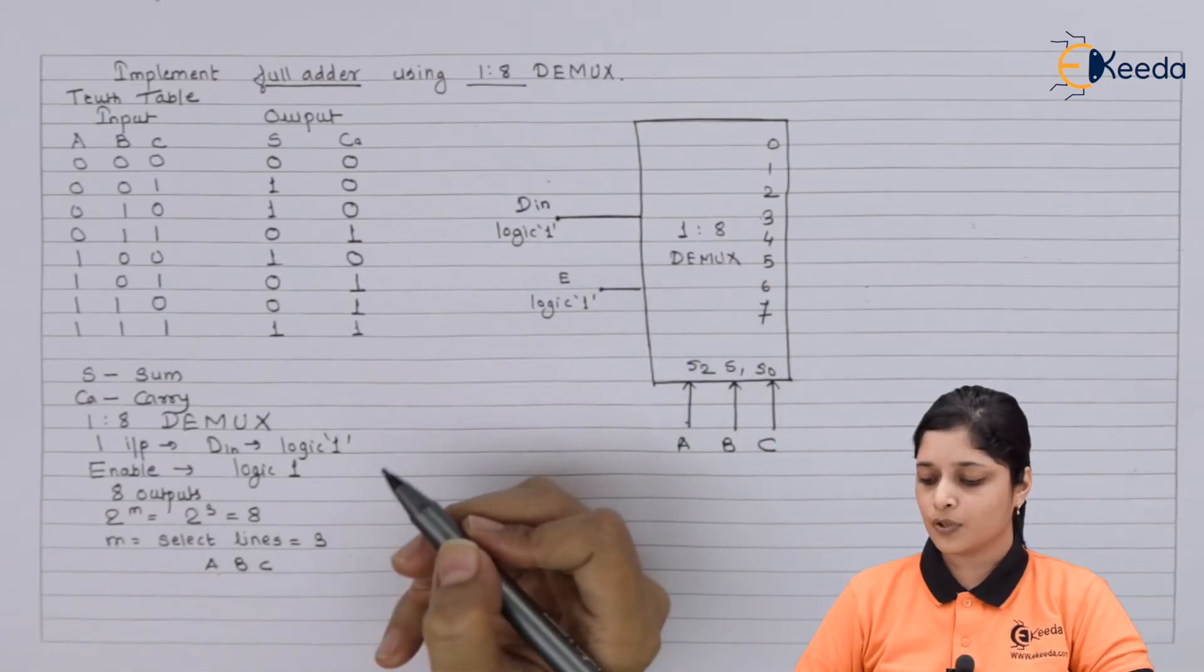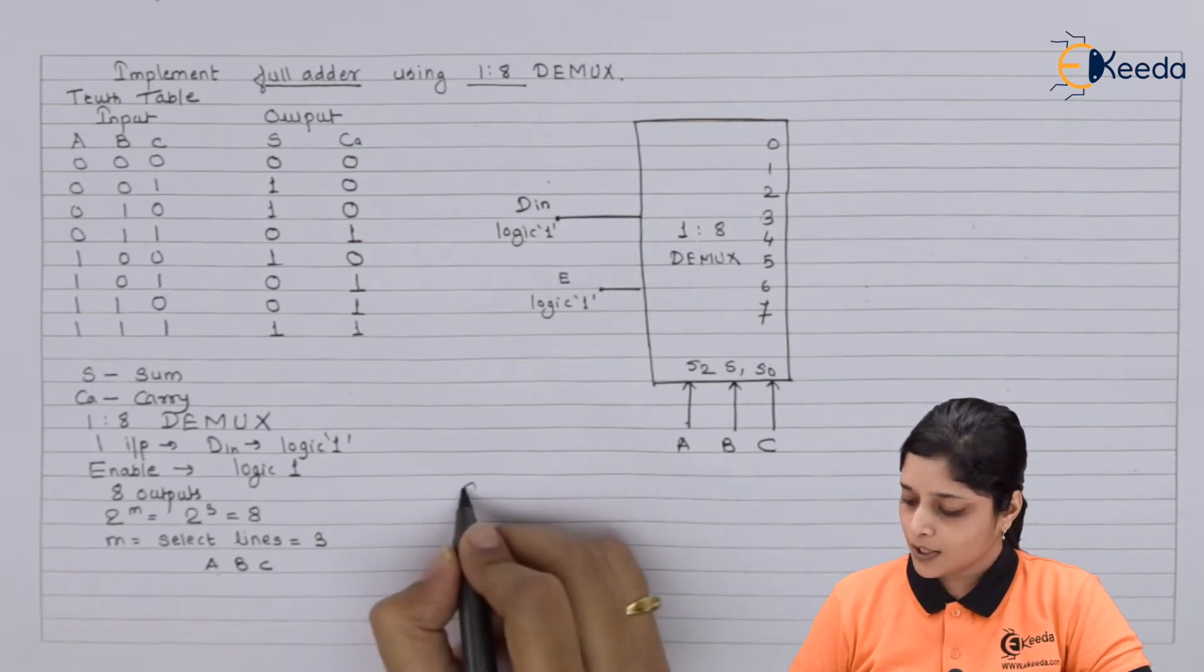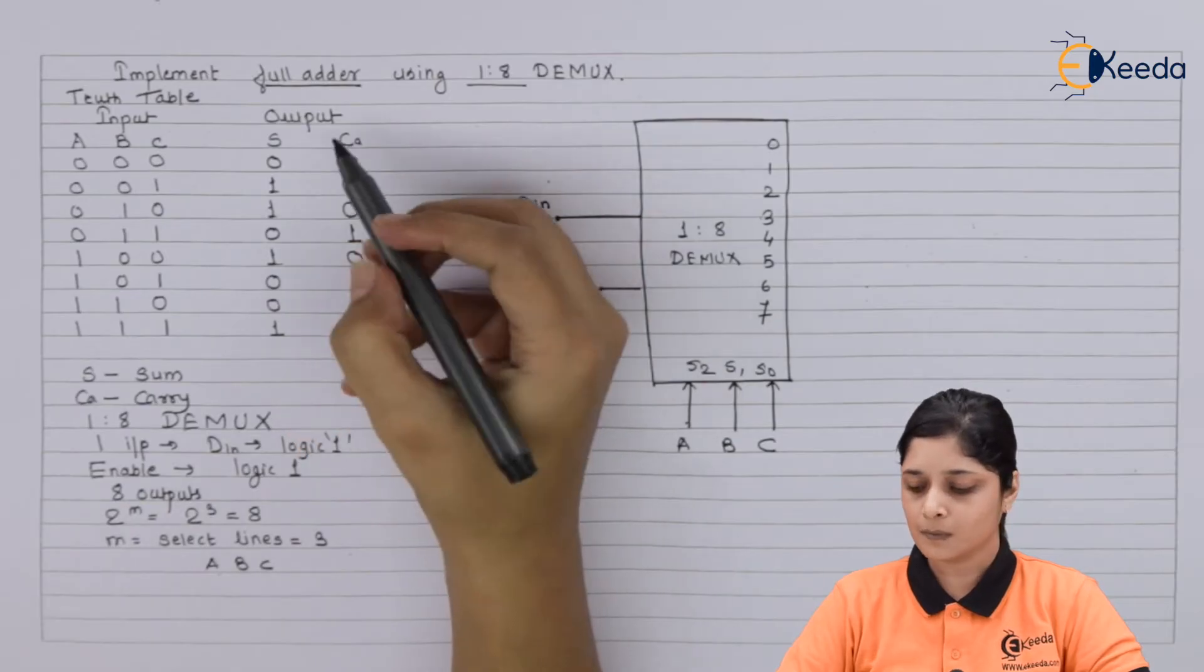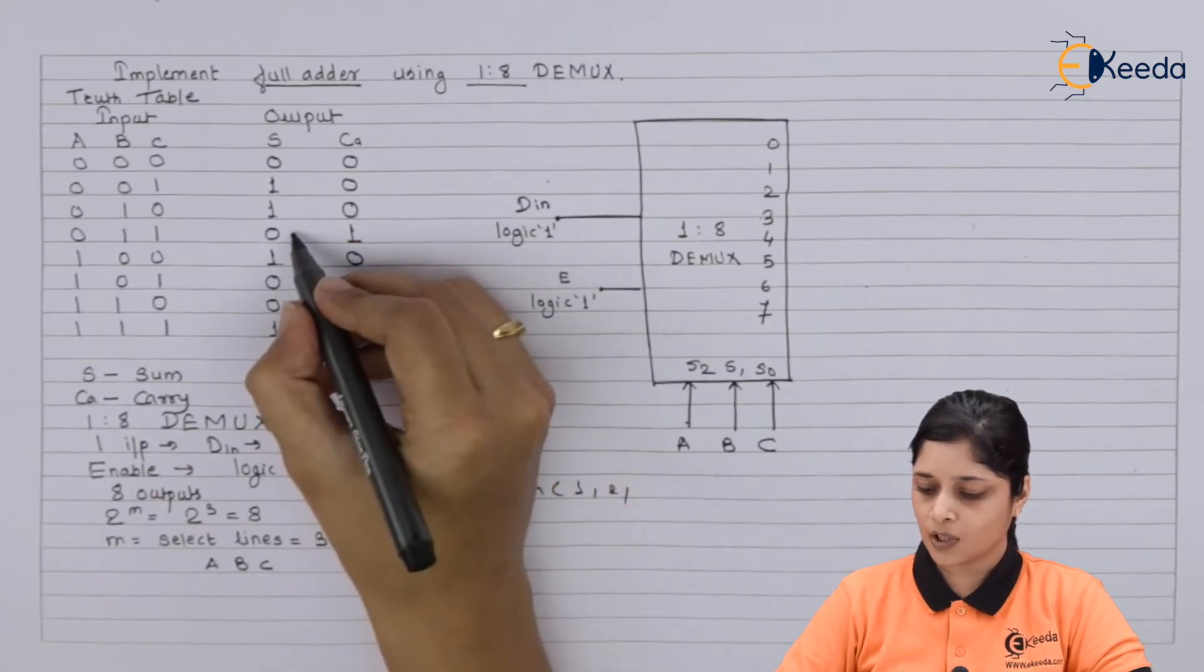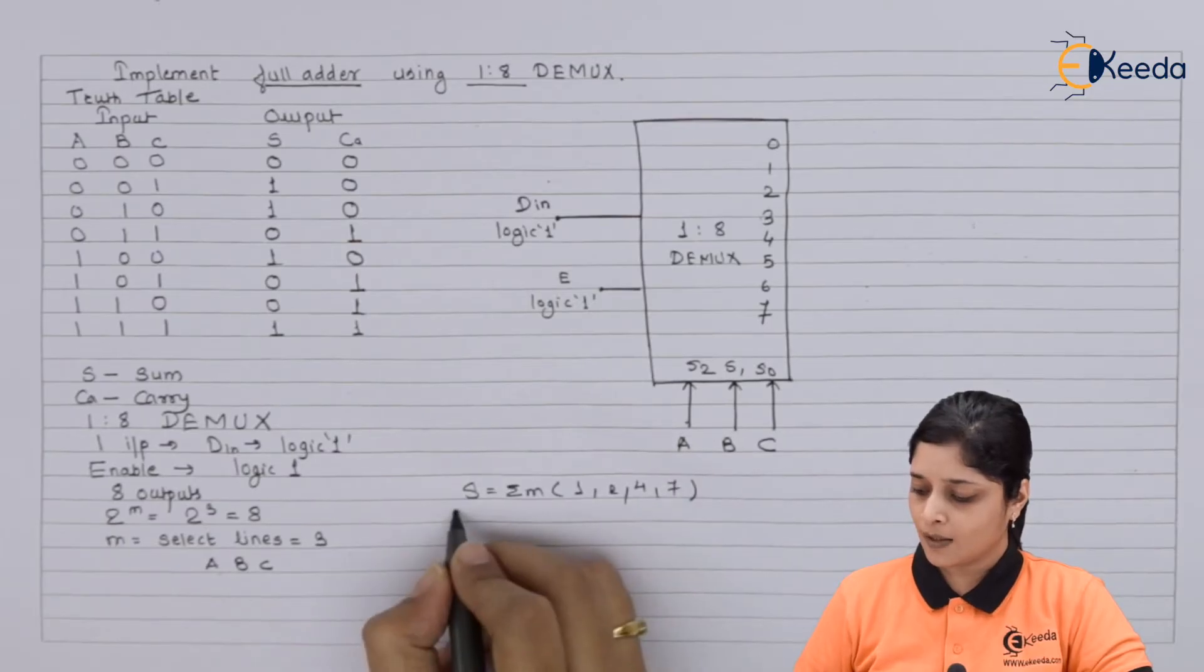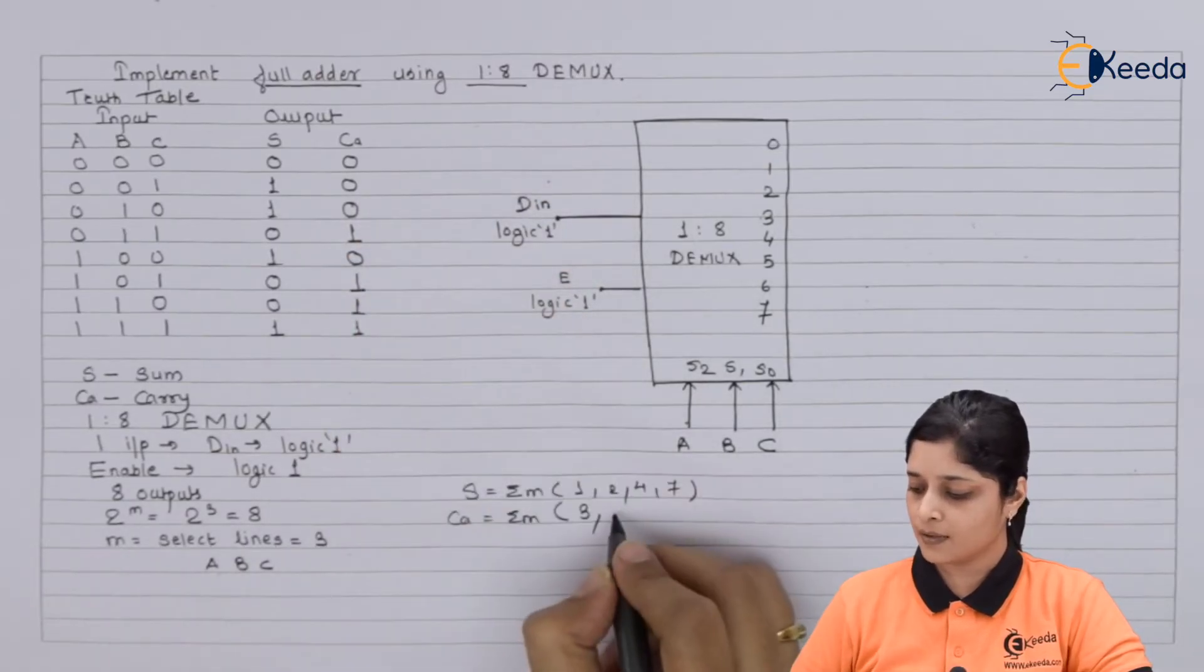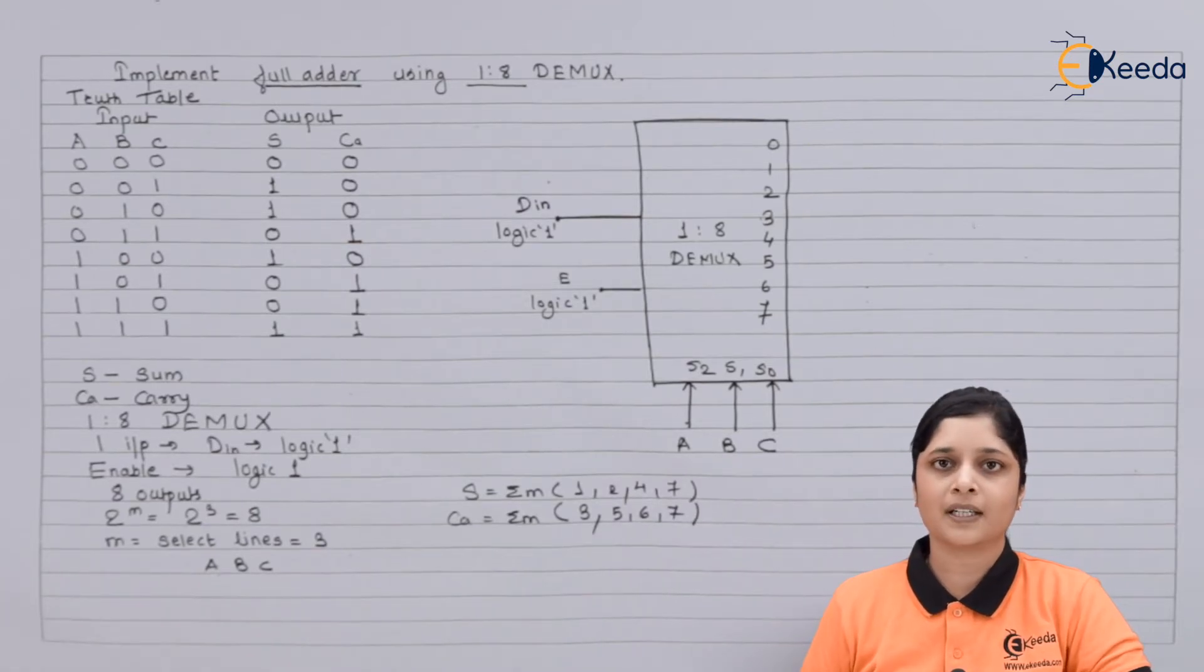Now for getting the outputs you should know the expressions for sum and carry. So the expression for sum is summation M, you have to collect the ones and their minterms. So 1, 2, 3 is not there, 4 and 7. In this way this is the expression for sum and carry.